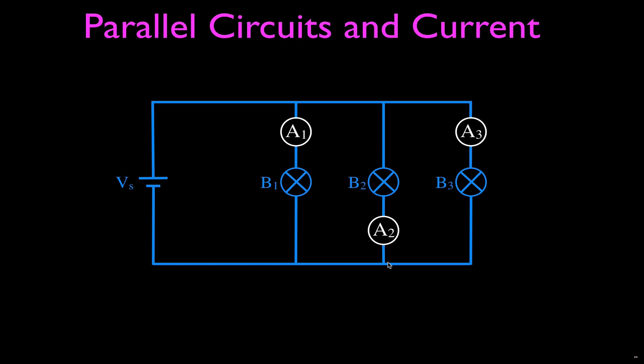You put the current meters in series with the elements and you put the voltmeters across the elements. Now, also, we would like to have maybe what's the total current. So we might put a total current meter right here and T for a total current. And I think that's all that we would do like that. That's pretty straightforward.